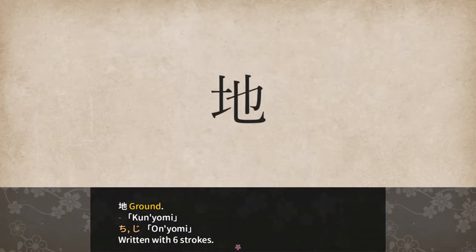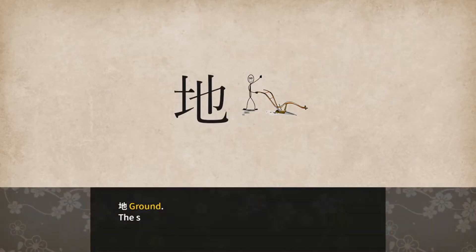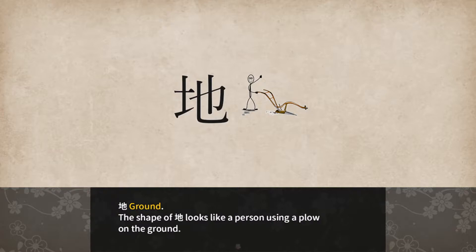No kun'yomi this time, and chi or ji for on'yomi, written with six strokes. The shape of chi looks like a person using a plow on the ground.